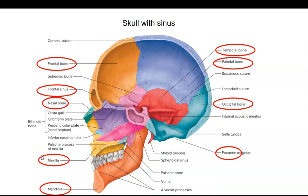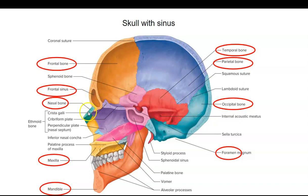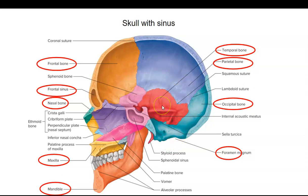Here's a sagittal section of the skull — we're looking at it from the side. Here's the frontal bone in front. Here's the nasal bone, there's the maxilla (the upper jaw), the lower jaw is the mandible. The occipital bone in back. Here's the foramen magnum, or the big opening where the spinal cord exits. And then here's the parietal bone on the side, and the temporal bone on the side as well.